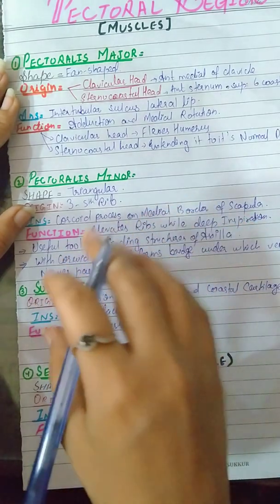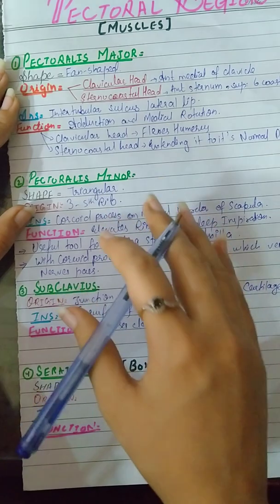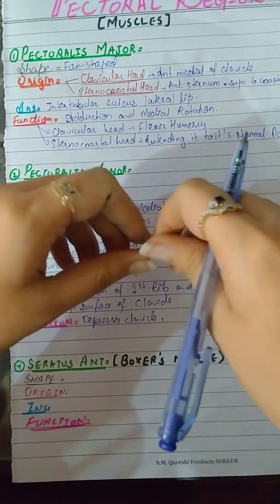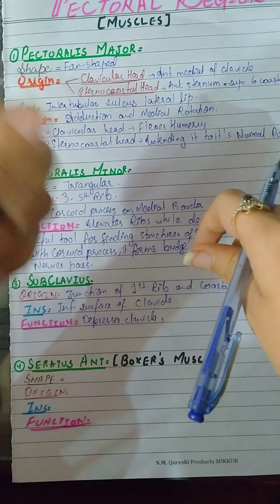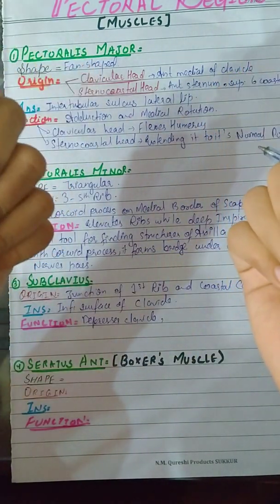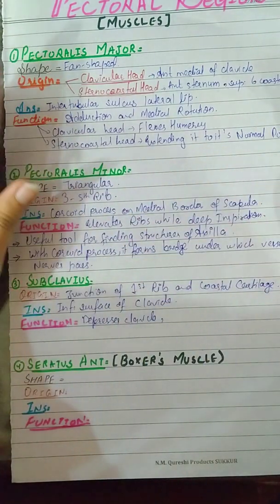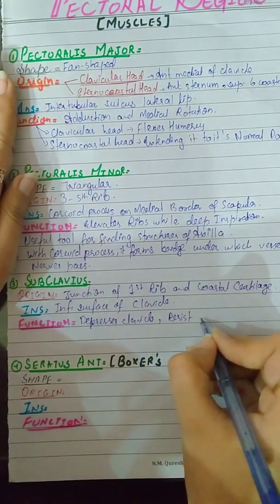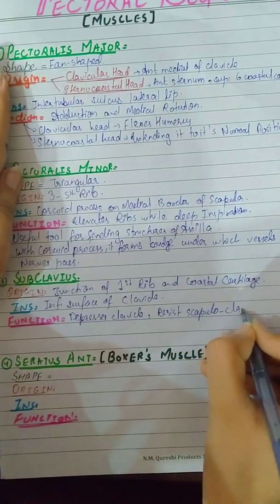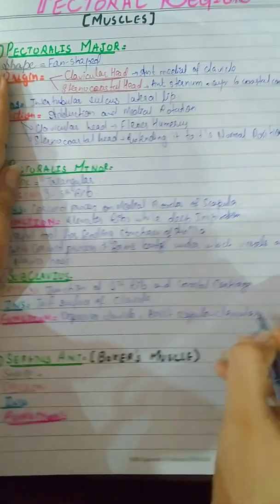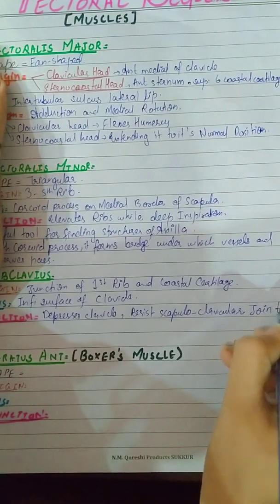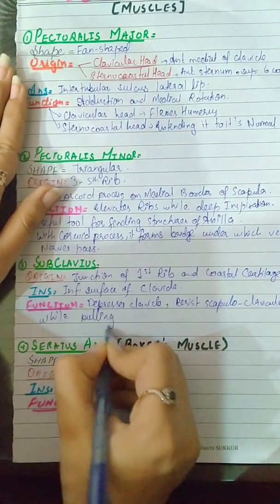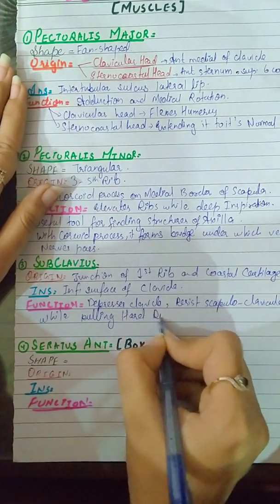A tug-of-war game is when there's a rope tied between two parties and they stretch the rope to their sides. The subclavius resists the scapuloclavicular joint while pulling hard during tug-of-war.